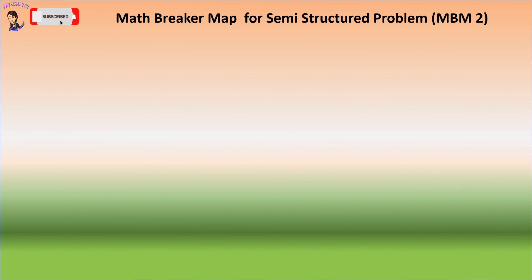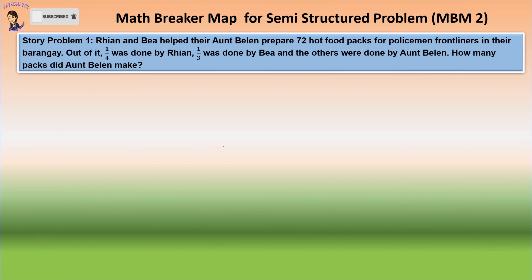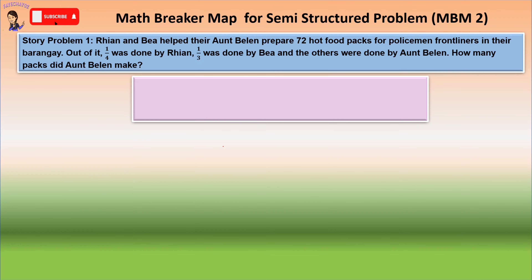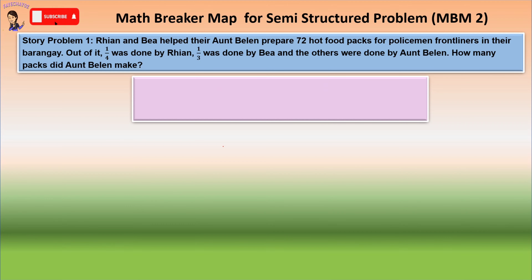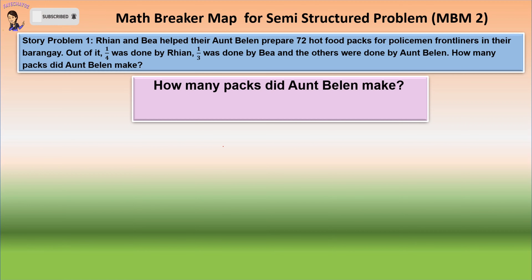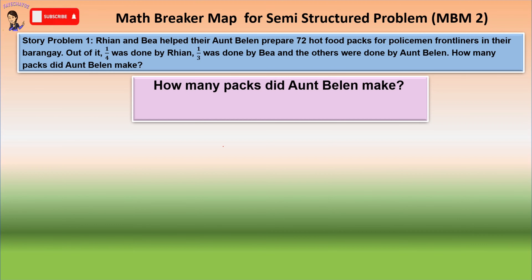To solve this problem, we're going to use Math Breaker Map for Semi-Structured Problems. First, let us know what is asked. In this given problem, we're going to identify how many packs did Aunt Belen make. Then, let us determine what are the given packs.